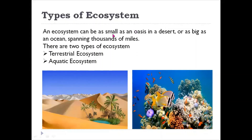An ecosystem can be as small as an oasis in a desert — a very small pond or area with sparse vegetation — or as big as an ocean spanning thousands of miles. Even our Earth itself is an ecosystem, with the interaction of the physical environment and the biological environment.